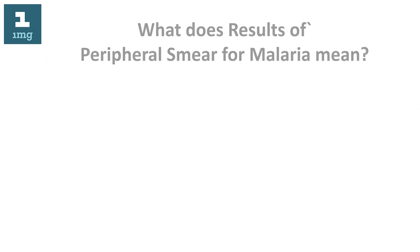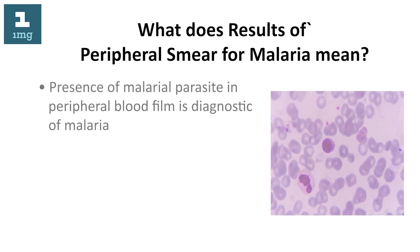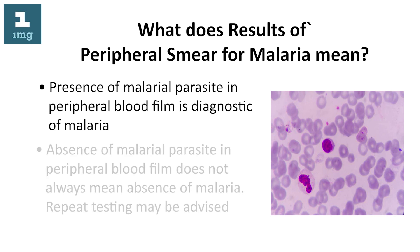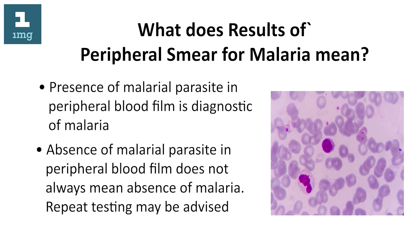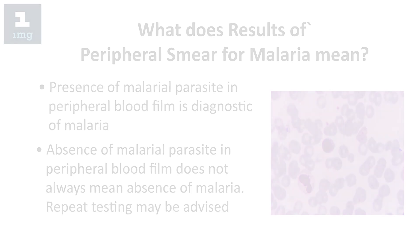What do the results of a peripheral smear for malaria mean? Presence of malarial parasite in the peripheral blood film is diagnostic of malaria. Absence of malarial parasite in the peripheral blood film does not always mean absence of malaria. Repeat testing may be advised.